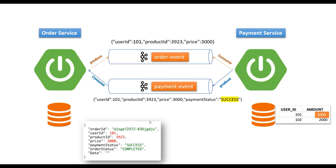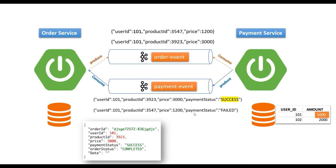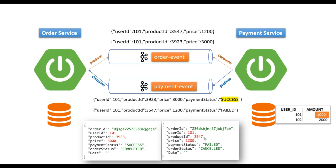Once order service consumes that event with payment status 'success', it completes the order. Now suppose user ID 101 wants to purchase again with a price of 1200. Payment service listens to the same topic, checks user 101's balance which is now 1000, and since 1200 exceeds the limit, payment service publishes an event to the payment-event topic with status 'failed'. Order service consumes that event and cancels the transaction, returning a response showing payment status 'failed' and order status 'cancelled'.